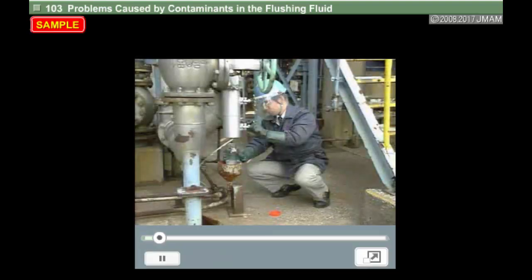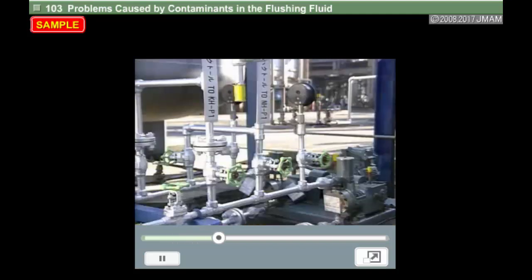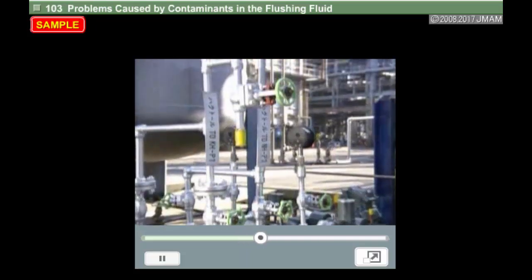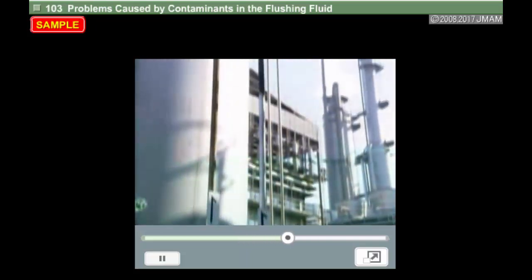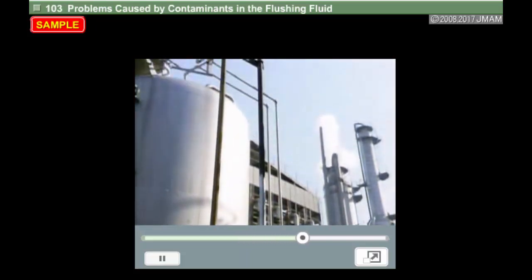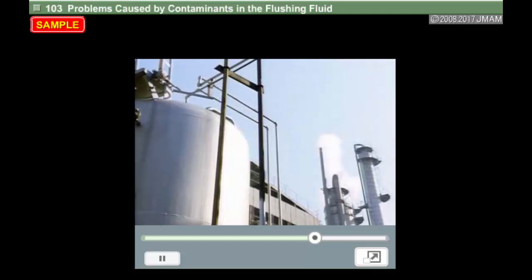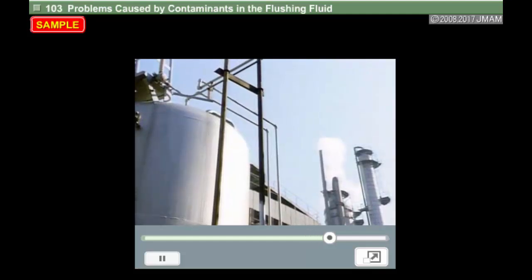If corroded products are present, we have to consider making changes. For example, we may change the operating conditions in the previous process, or introduce corrosion control measures such as anti-corrosive agents.